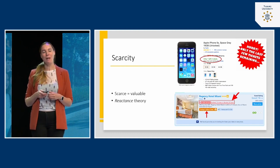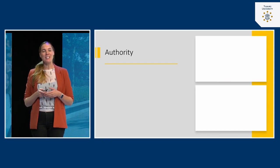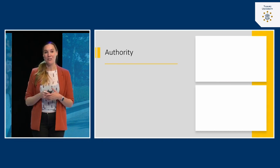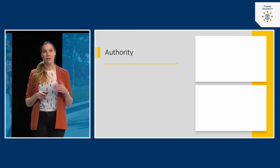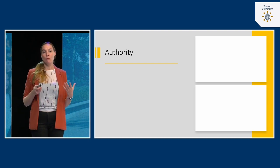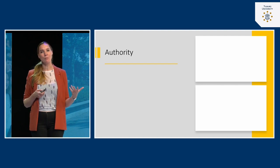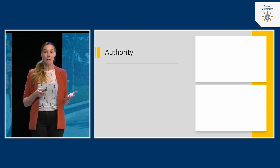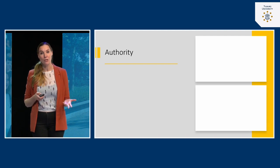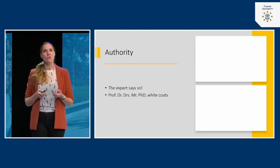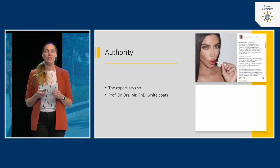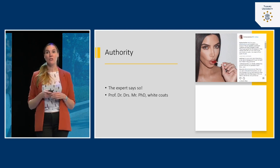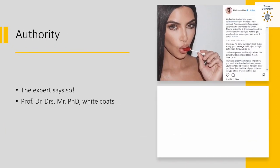A very powerful social influence tactic — which we'll return to in the next lecture — is the principle of authority. If an expert claims to know something or sell you something, we're more likely to be convinced. A credible source is more persuasive. But you need to be very aware: sometimes an expert is not really an expert. For example, influencers do this a lot — here you see Kim Kardashian selling appetite-suppressing lollipops. Would that actually work? Does she really know what she's doing?